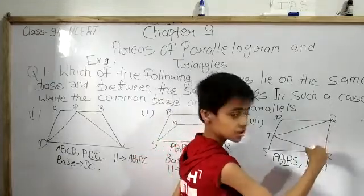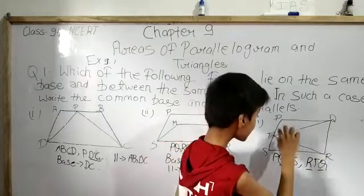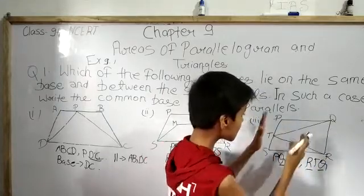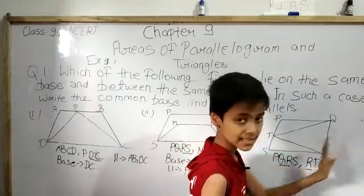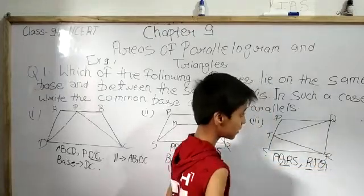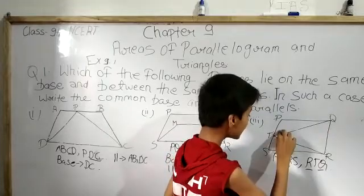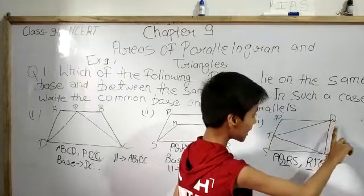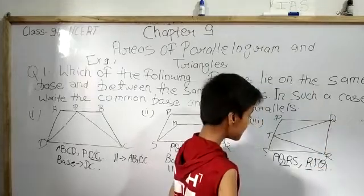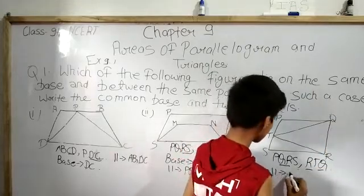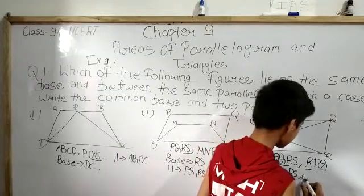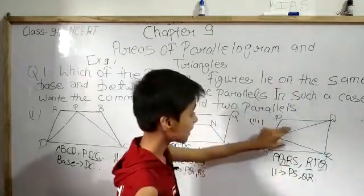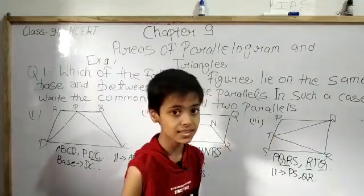Now do PQRS and RTQ lie between the same parallels? The parallels of this parallelogram are PS and QR. Point T of triangle RTQ is touching PS, and points R and Q are touching QR itself. So yes, the answer is yes — they lie between the same parallels. The two parallels are PS and QR.